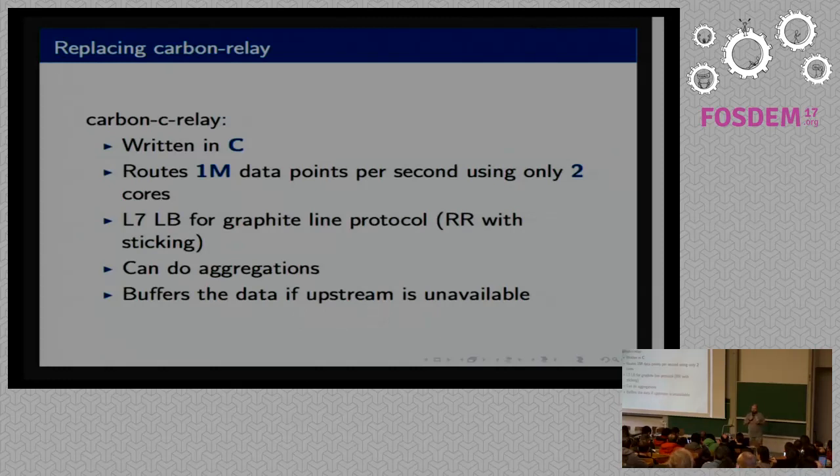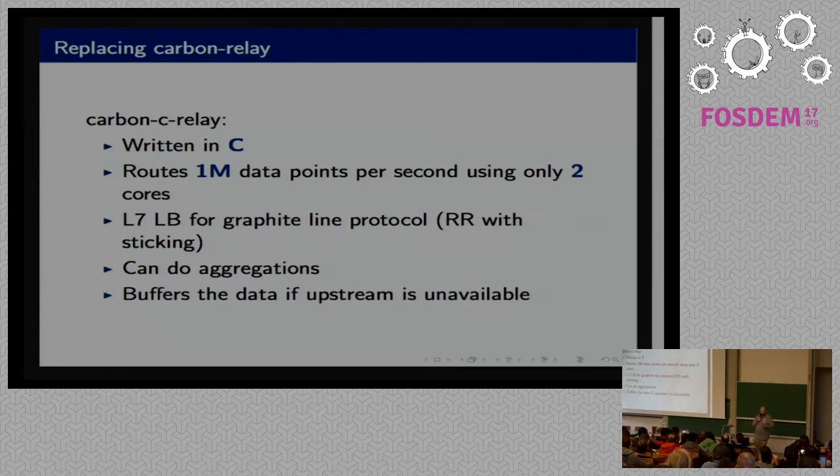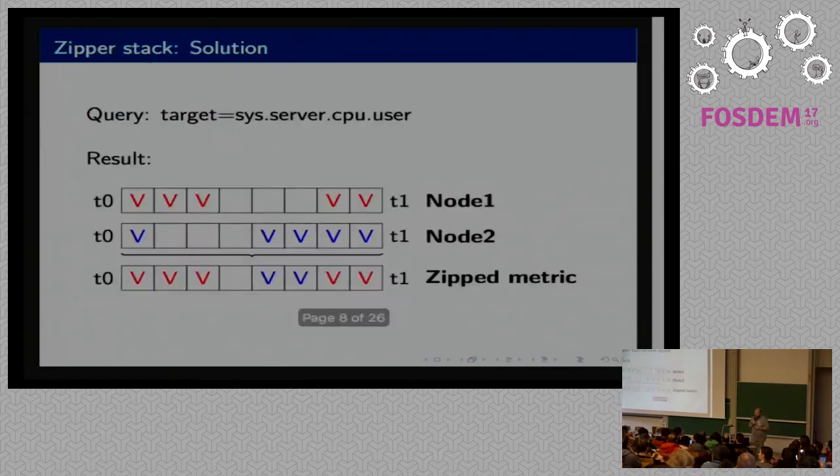What is Carbon C Relay? It's a not really simple daemon at this moment, written in C. It's also very fast because it can route more than one million points per second using only two CPU cores. For our cases, Carbon Relay was scaling not really well, and Carbon C Relay was more than ten times faster than Carbon Relay in our cases. It also can do aggregations, and in case of some network failures, it can buffer your data for some amount of time.